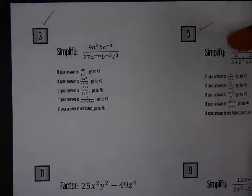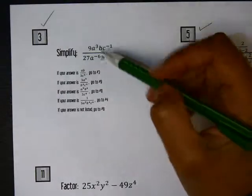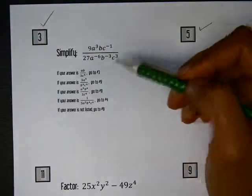This is for worksheet 22.4, and we're going to look at number 3, which is simplifying this rational expression.